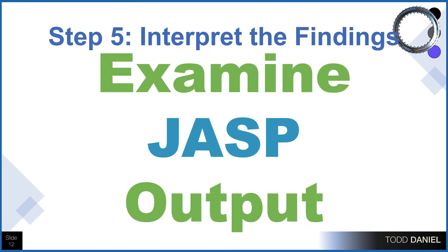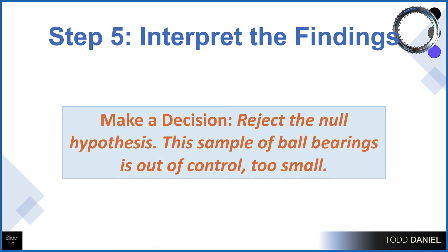How do we interpret these findings? Our decision is to reject the null hypothesis — the hypothesis that says the sample mean and the population mean are the same. By rejecting the null hypothesis, we are concluding that the sample and population means are statistically significantly different, and that this sample of ball bearings is out of control — they are systematically too small to be within specification.